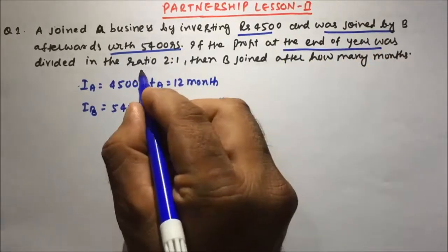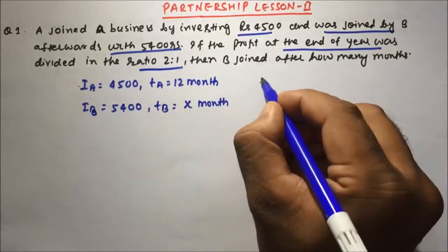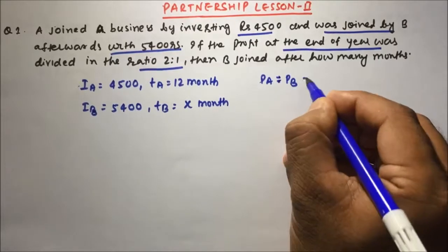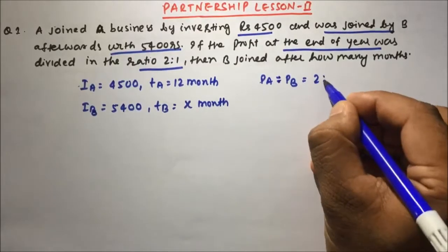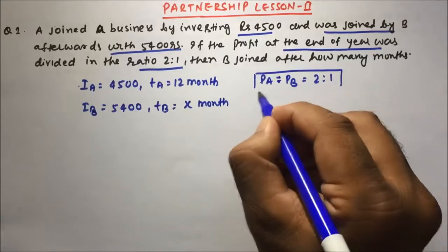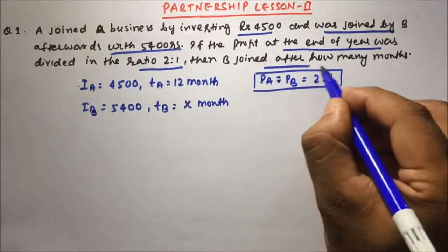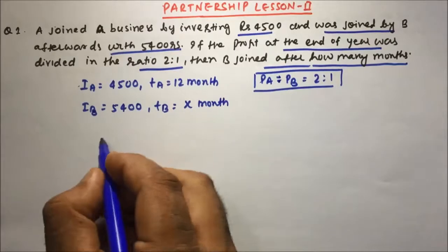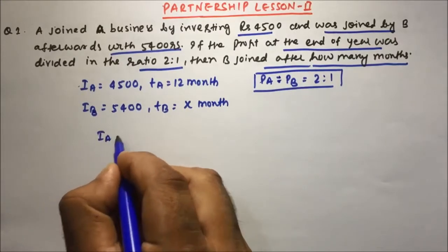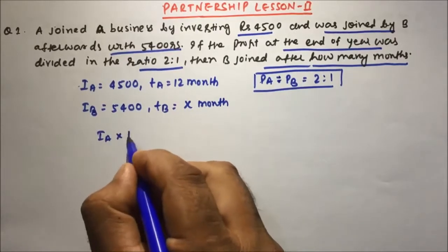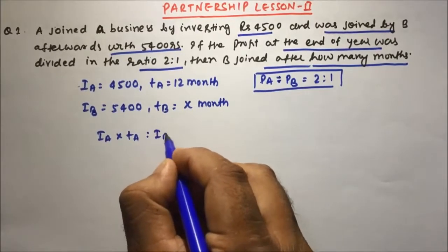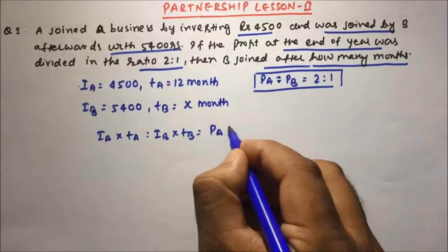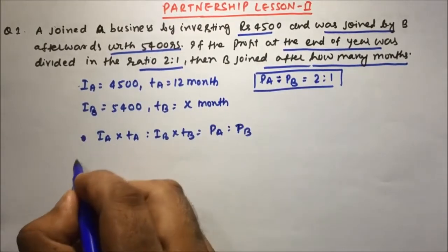If the profit at the end of the year was divided in the ratio 2 is to 1, so profit of A to profit of B equals 2 is to 1. We know that investment multiplied by time gives us the profit ratio.